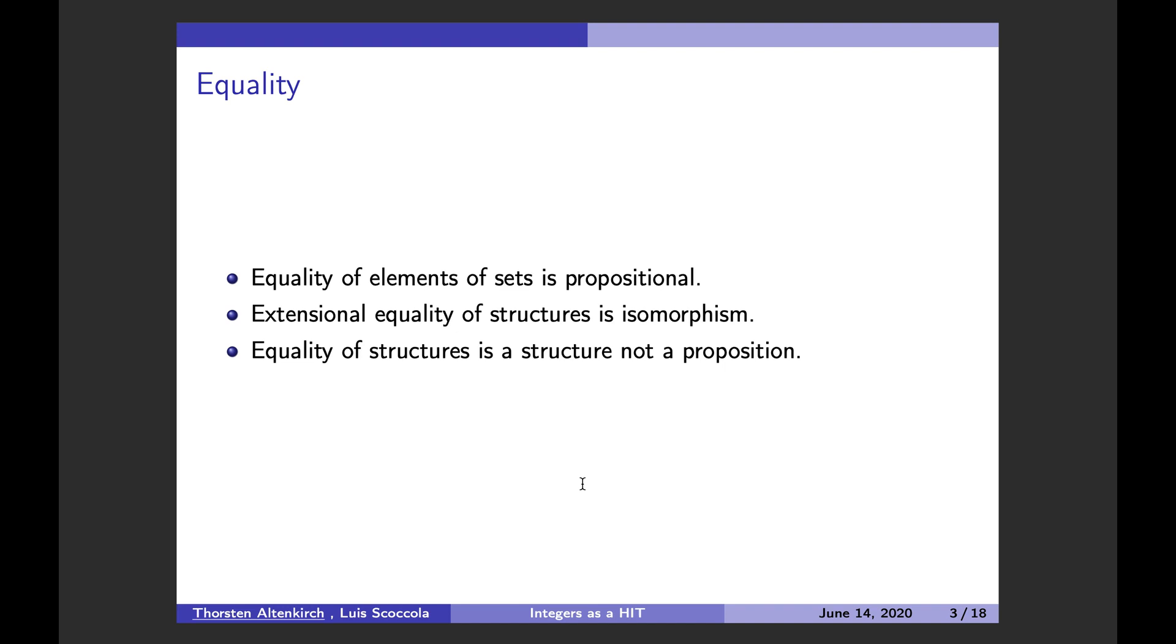However, what extensional equality of structures, let's say something like monoids, or some other algebraic structure, two monoids are really equal if they are isomorphic. And we cannot distinguish isomorphic monoids. Hence, this is the right notion of equality. However, isomorphism is not a proposition. Because there is a choice of an isomorphism, which is non-trivial. So hence, what we can say is that equality of structures is a structure, not a proposition.